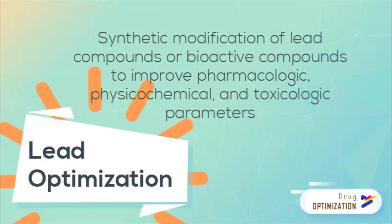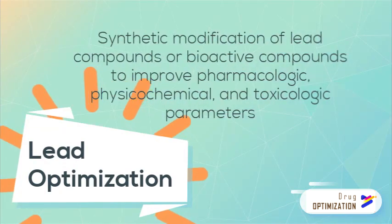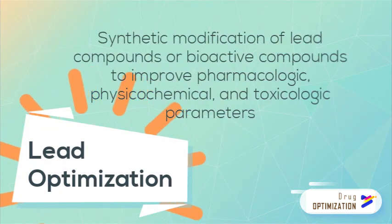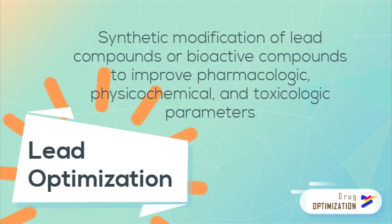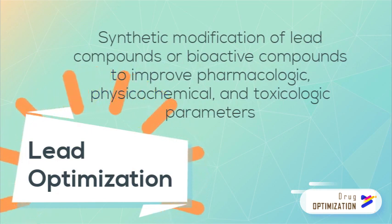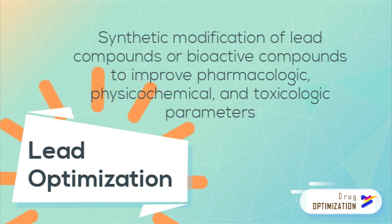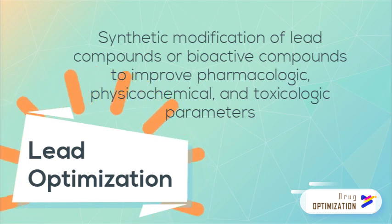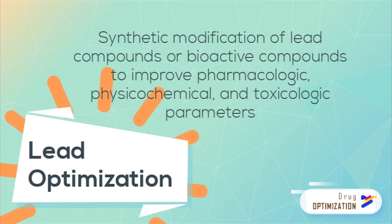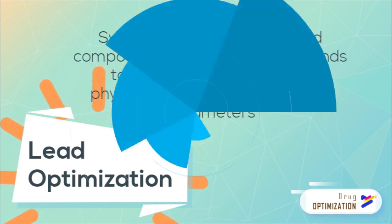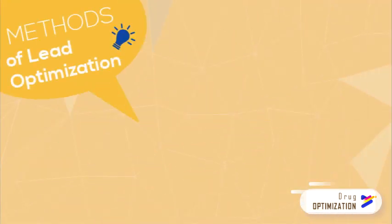Lead optimization is the synthetic modification of a lead or bioactive compound and is the final drug discovery phase. The objective of this phase is to maintain favorable properties in lead compounds while improving on deficiencies in the lead structure in terms of physicochemical, pharmacokinetic, and toxicologic parameters. Once the lead nucleus is identified, it is easy to exploit. Thus, in designing an analogue, molecular modifications of the lead compound can involve different strategies.